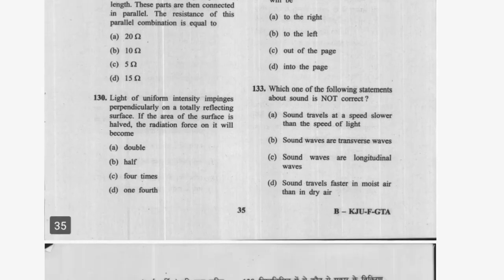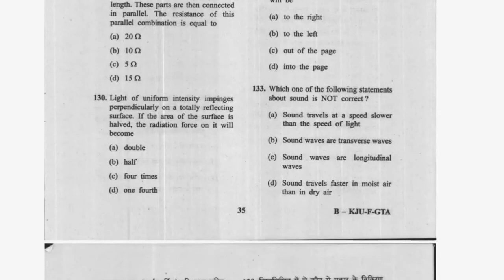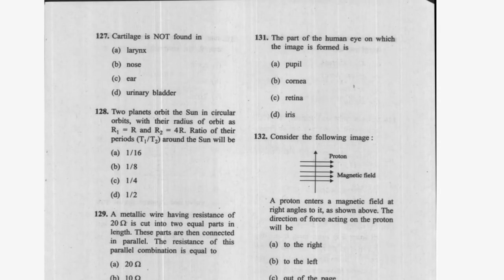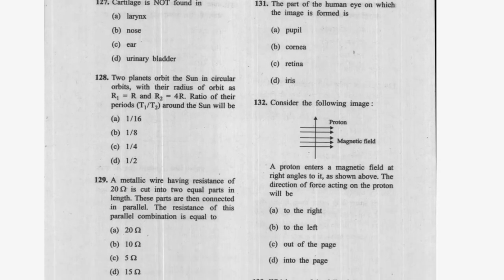Question 120: Light of uniform intensity impinges perpendicularly on a totally reflecting surface. If the area of the surface is halved, the radiation force on it becomes half — option B is correct. Question 121: The part of the human eye on which the image is formed is the retina — option C is correct.